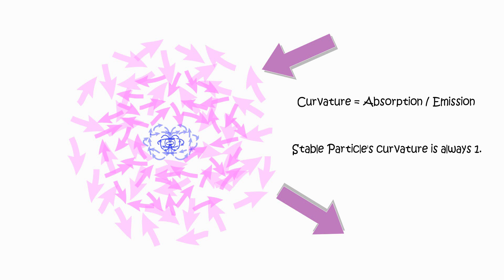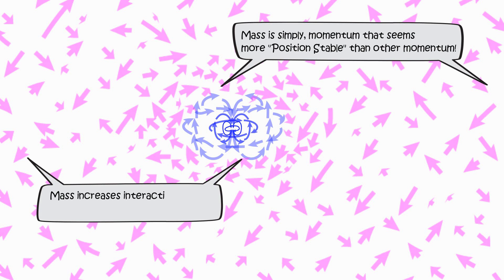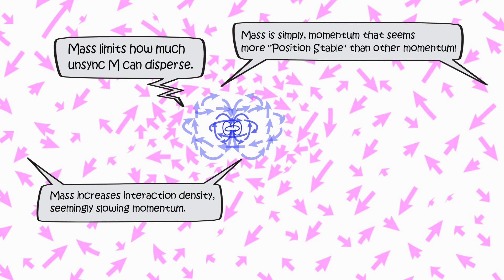Mass effect: A field system, aka particle of mass, is momentum traveling in regenerating routes. Synchronized momentum maintaining same field density around itself, limiting how much surrounding unsynchronized momentum can disperse, as it needs unsynchronized momentum to adapt interaction differentials with surrounding.